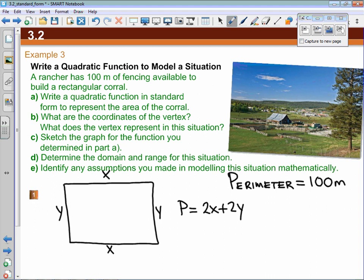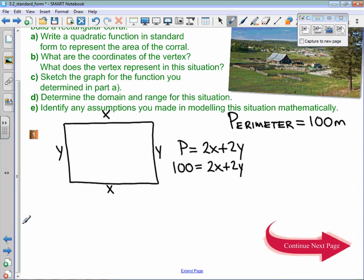But we know that the perimeter is 100. So 100 is equal to 2X plus 2Y. And that's going to be a really important equation in a little bit here. The next part of this question says, write a quadratic function in standard form to represent the area of the corral. Well, perimeter is the addition of all the sides, but area is going to be whatever X is times whatever Y is.